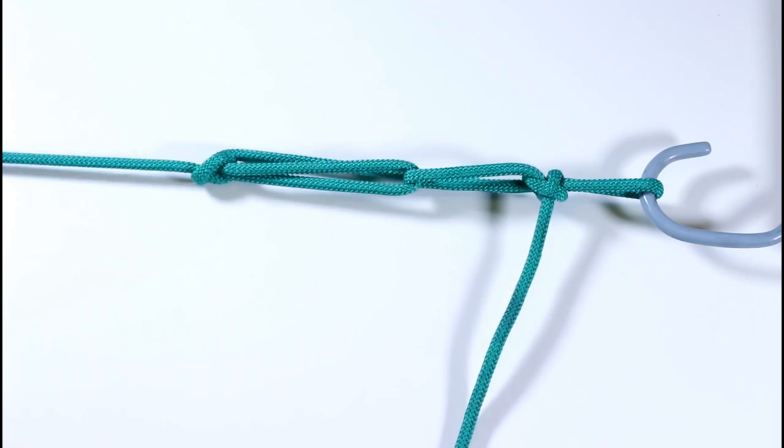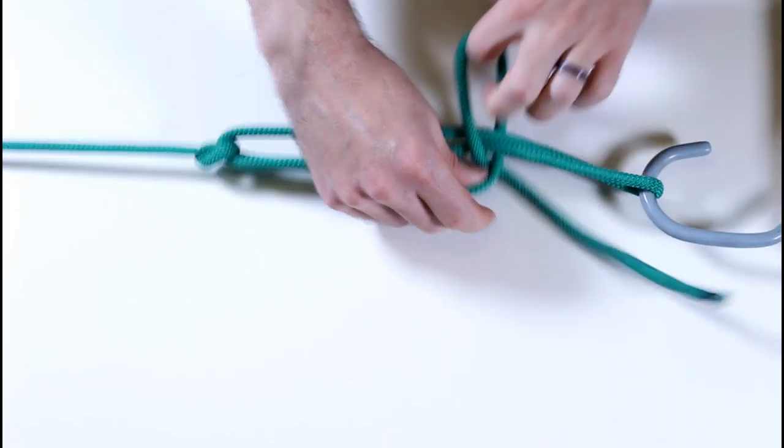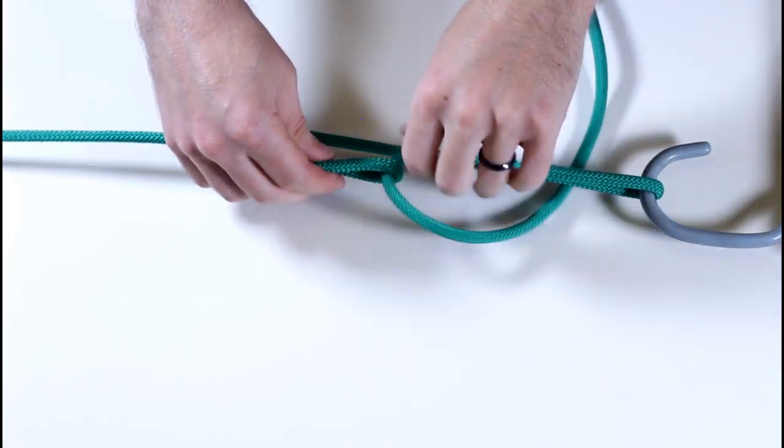Pour yourself a drink, do whatever it was that you needed the trucker's hitch for, then, when you're ready, just back off those two locking loops, and the whole thing should come undone easily.